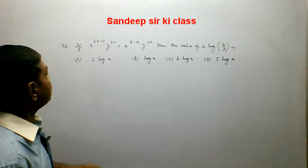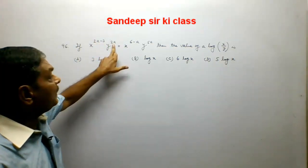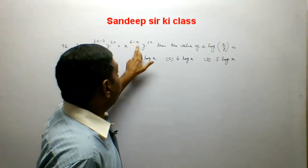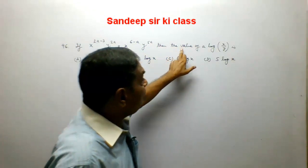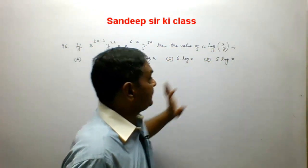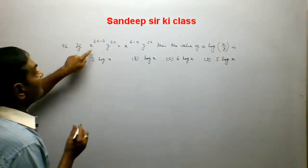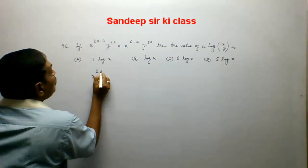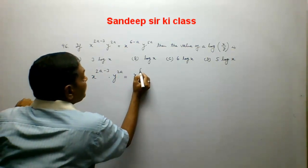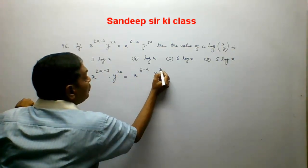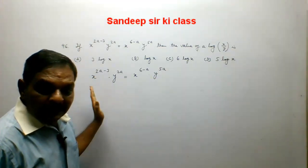Question number 96: if x to the power (2a minus 3) into y to the power 2a is equal to x to the power (6 minus a) into y to the power 5a, then find the value of a log(x upon y). Options are given. We have been given the equation x to the power (2a minus 3) into y to the power 5a.